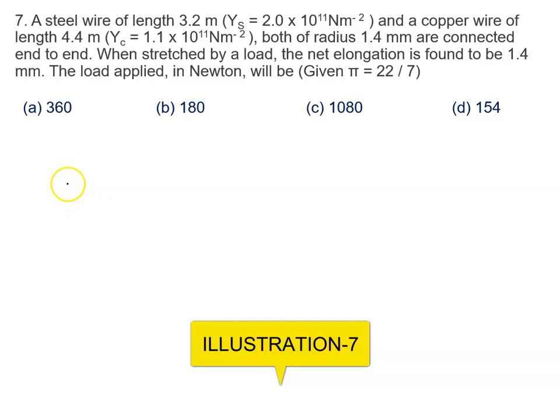A steel wire of length 3.2 meter and a copper wire of length 4.4 meter, both of radius 1.4 millimeter, are connected end to end.